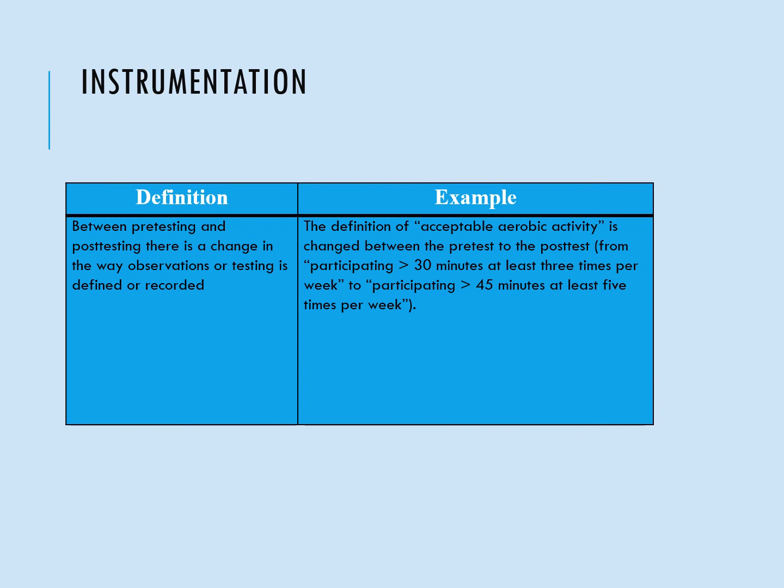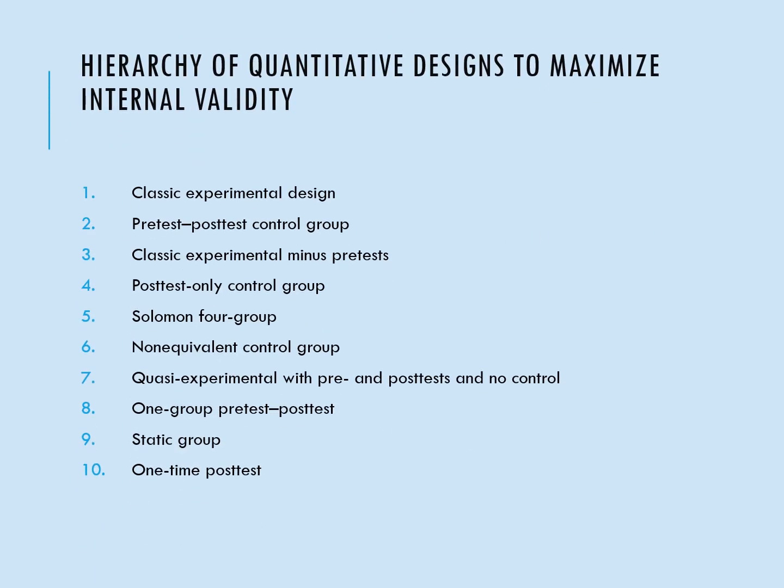Our final example is instrumentation. Basically, between the pre-testing and post-testing there's a change in the way observations were made or testing was defined or recorded. We want to make sure our testing is consistent from pre-test to post-test. For example, if the definition of acceptable aerobic activity changes from 'more than 30 minutes at least three times per week' to 'more than 45 minutes at least five times per week,' one of our operationalized concepts changed in its definition, which is going to skew the results.